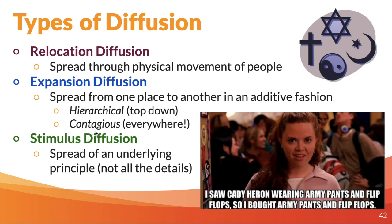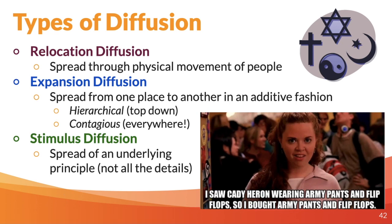Or it could be what we call contagious diffusion, which is still a type of expansion diffusion. Then we have stimulus diffusion, where there's a spread of an underlying principle but maybe not all the rest of the details. It's one particular stimulus that sends shockwaves throughout the population, and they may not take on all the attributes of wherever that principle started, but something has caught the eye of many people and this underlying principle spreads quickly, even as it changes moving from person to person.